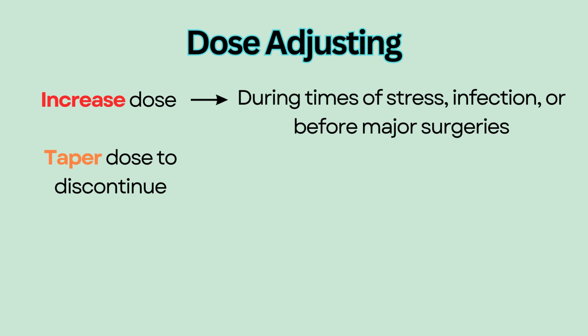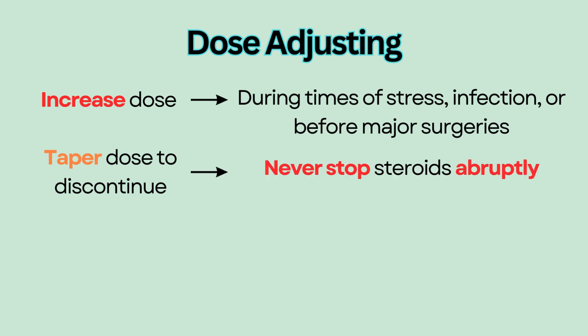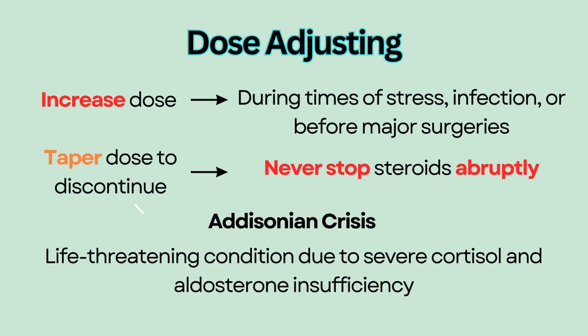If steroids are no longer indicated, doses need to be tapered off slowly so the body has time to adjust and produce its own steroid hormones. Never stop steroids abruptly, because it can lead to Addisonian crisis — a life-threatening condition due to severe cortisol and aldosterone insufficiency.